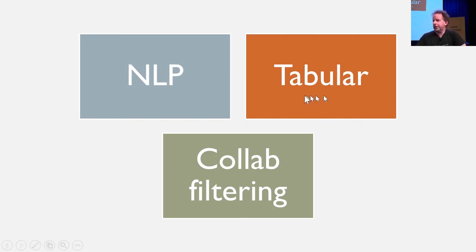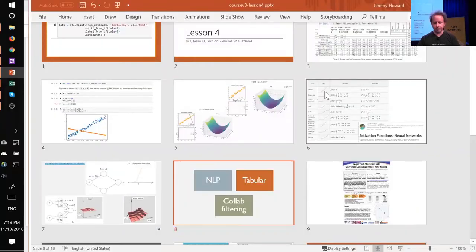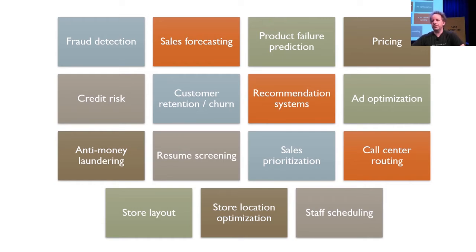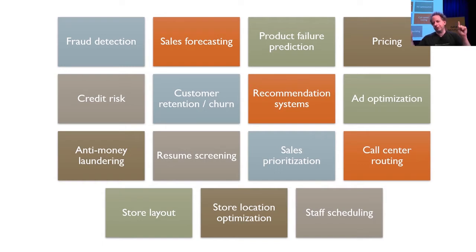So let's talk about tabular data — such as you might see in a spreadsheet, a relational database, or a financial report. Using neural nets for analyzing tabular data is — when we first presented this, people were deeply skeptical and thought it was a terrible idea, because everybody knows you should use logistic regression, random forests, or gradient boosting machines, all of which have their place for certain types of things.